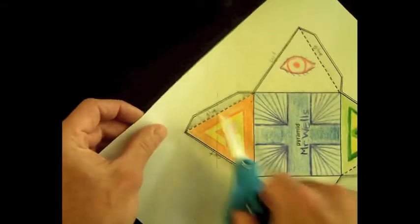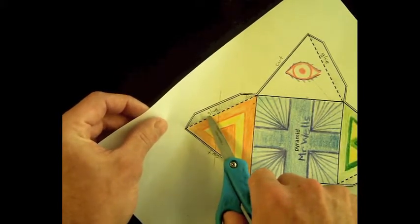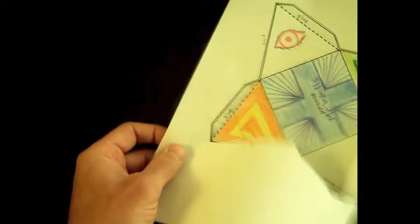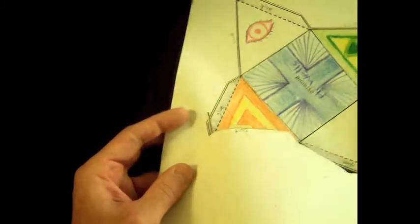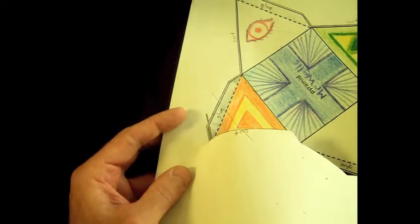Notice this part says glue - G-L-U-E spells glue. We're going to put some glue on that tab and fold it over so we can stick it to the other face.